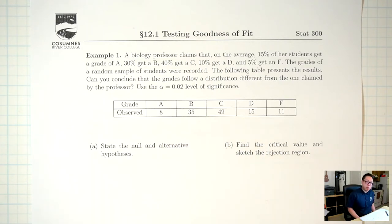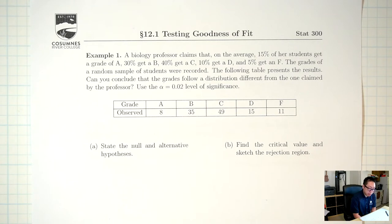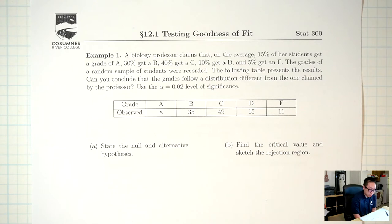Let's jump into example one and see what the situation is. A biology professor claims that on average 15% of students get an A, 30% get a B, 40% get a C, 10% get a D, and 5% get an F. The grades of a random sample of students were recorded. Can you conclude that the grades follow a distribution different from the one claimed by the professor?